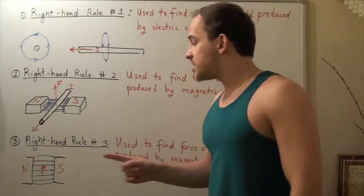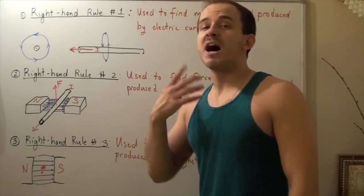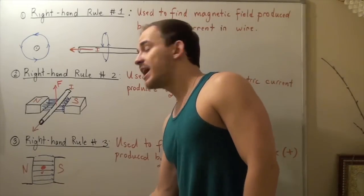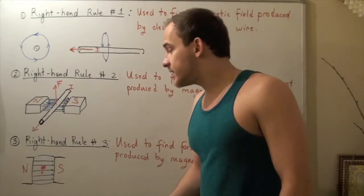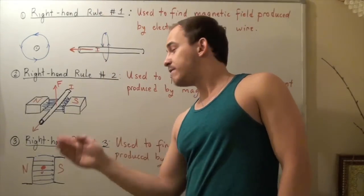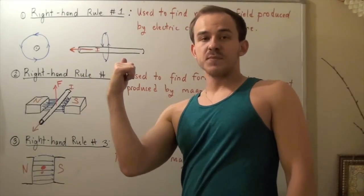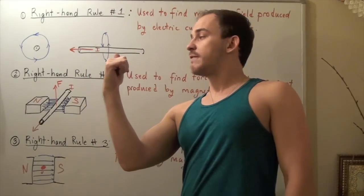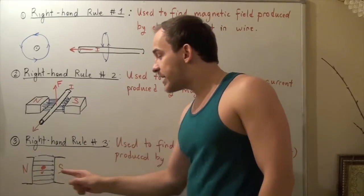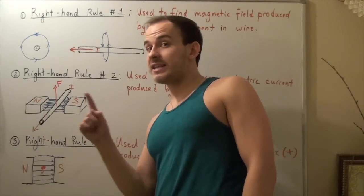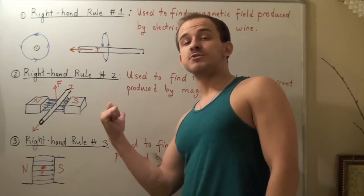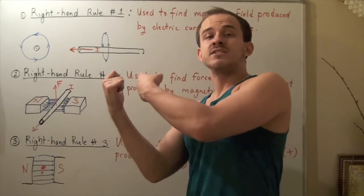Now suppose I reverse the direction of my positive charge so it is going upward. I use the same rule — my charge is going upward and my field lines are going this way. I raise my thumb and the force is going this way. So if my charge is moving upward rather than downward, it will move into the page because the force will be directed into the page.